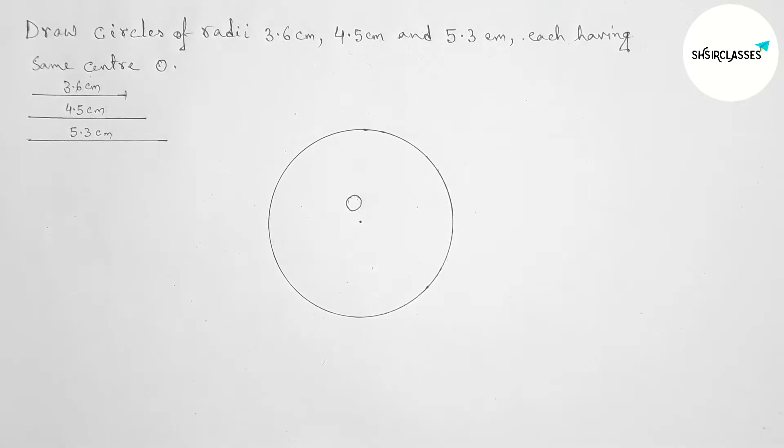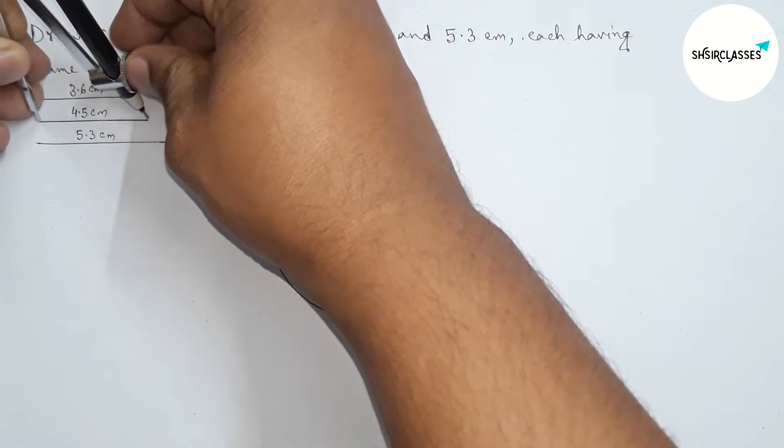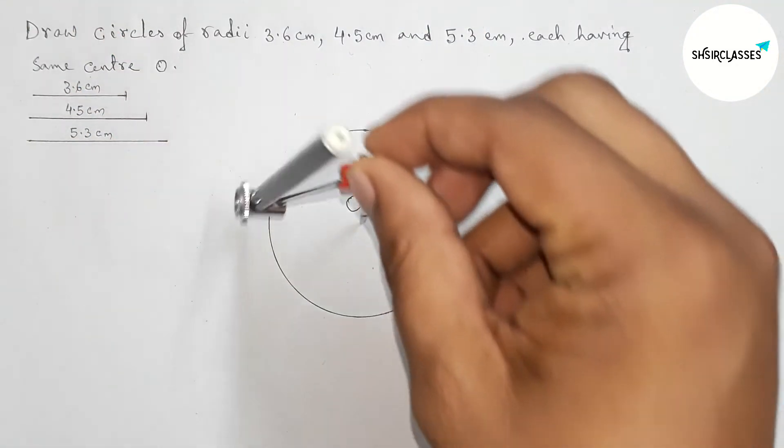Next, taking 4.5 centimeters as radius. Now putting the compass on the center O and drawing another circle with radius 4.5 centimeters.